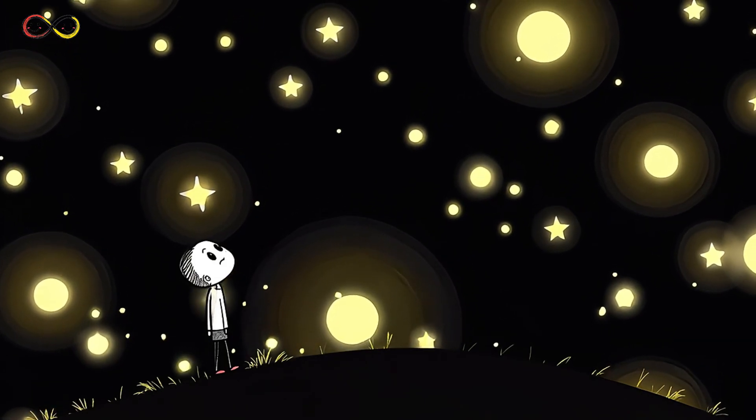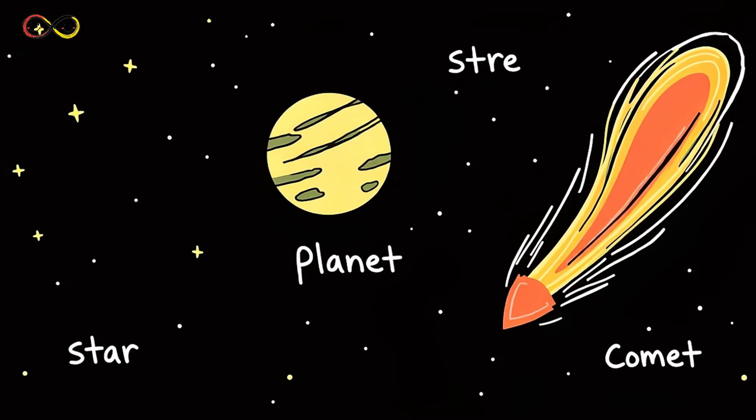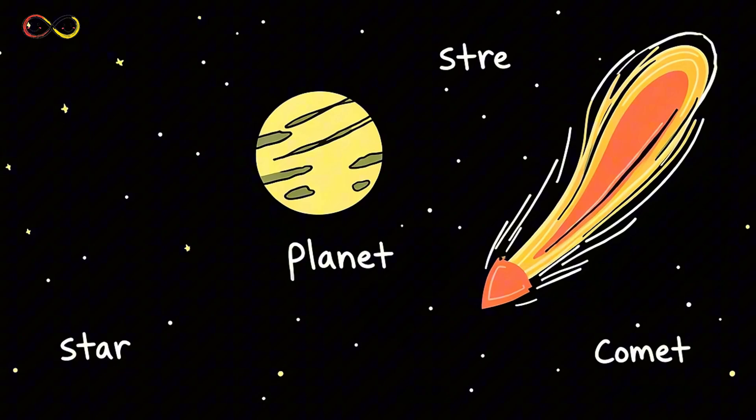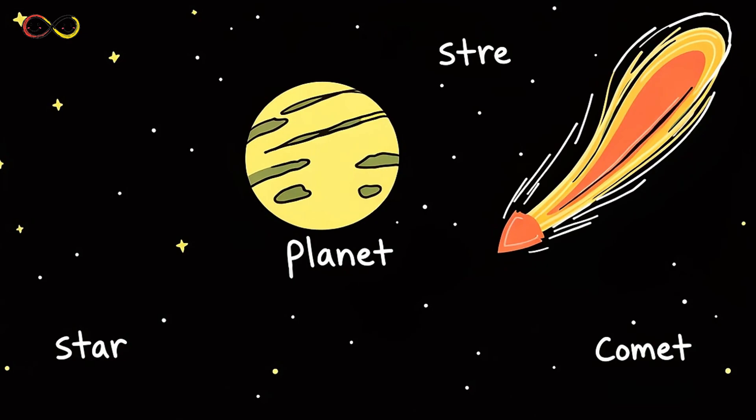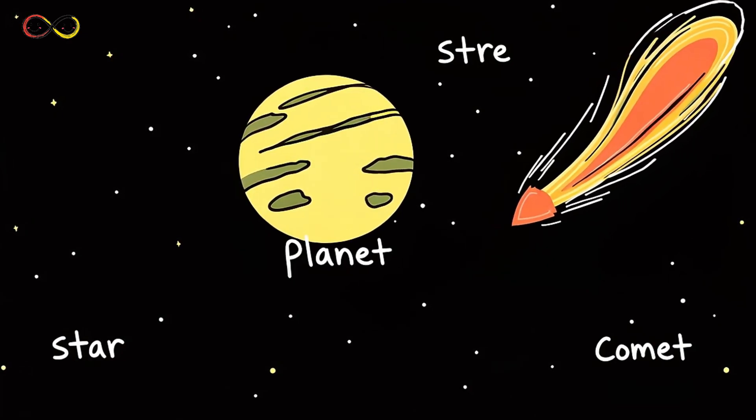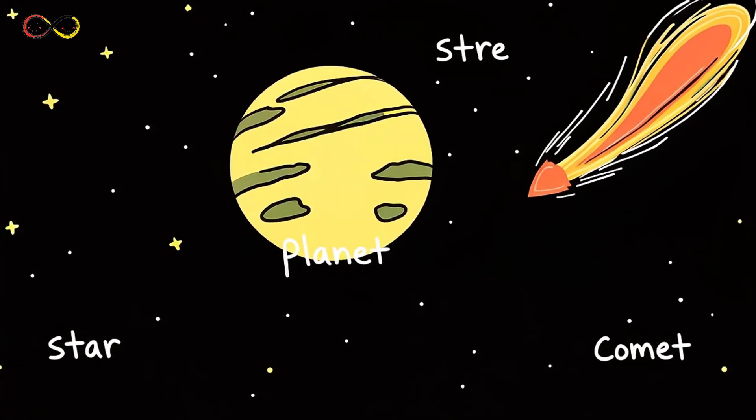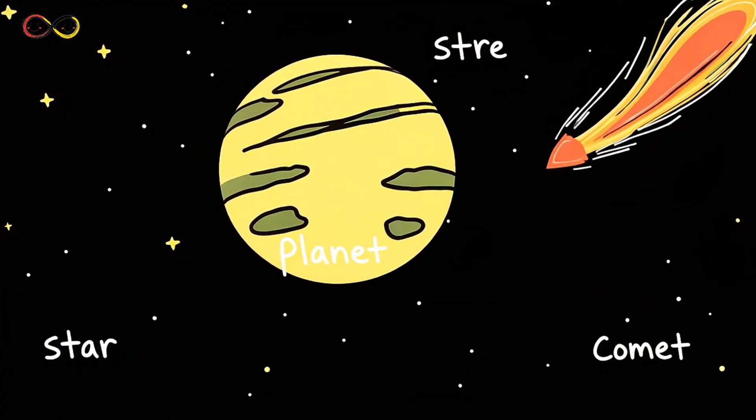At first glance, the night sky may seem like just a sea of stars. But look closely, there's more than meets the eye. Some of those shining dots are actually planets, quietly reflecting sunlight. Others are giant balls of gas burning bright. And sometimes, if you're lucky, you might even spot a comet streaking across the sky.